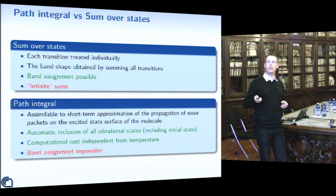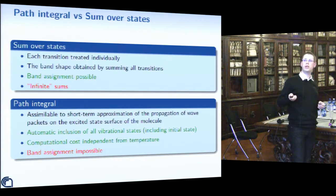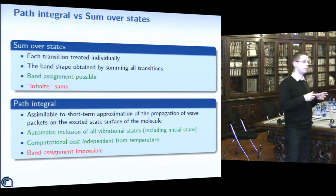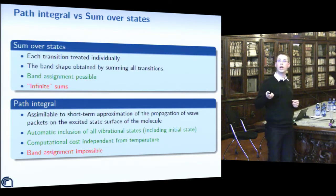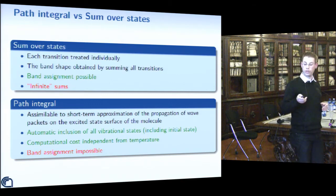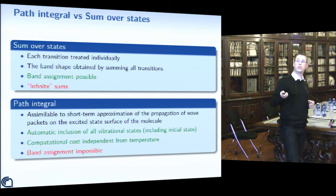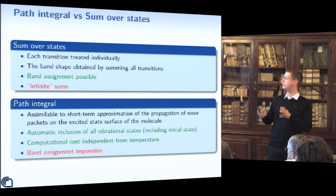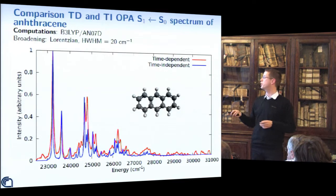The sum-over-states approach is able to provide band assignments. Another advantage of the path integral is that the computational cost for temperature is the same regardless of temperature, whereas for sum-over-states it quickly grows. We can combine both approaches: first compute with the path integral to have an idea of the band shape, then on the region of interest perform a sum-over-states for band assignments.